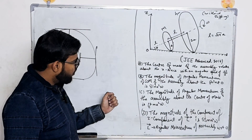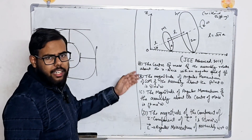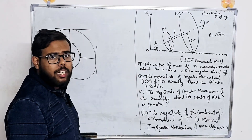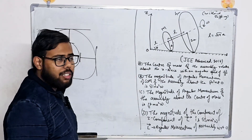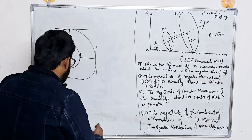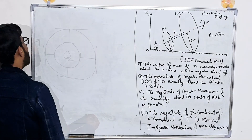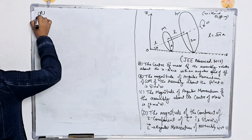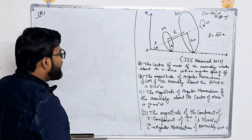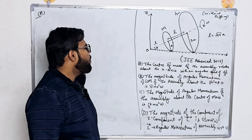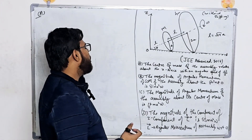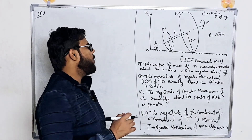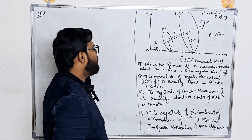Now let's check the options. It is a multiple correct answer question, so we have to be careful. Option A states that the center of mass of the assembly rotates about the Z axis with an angular speed of omega by 5.